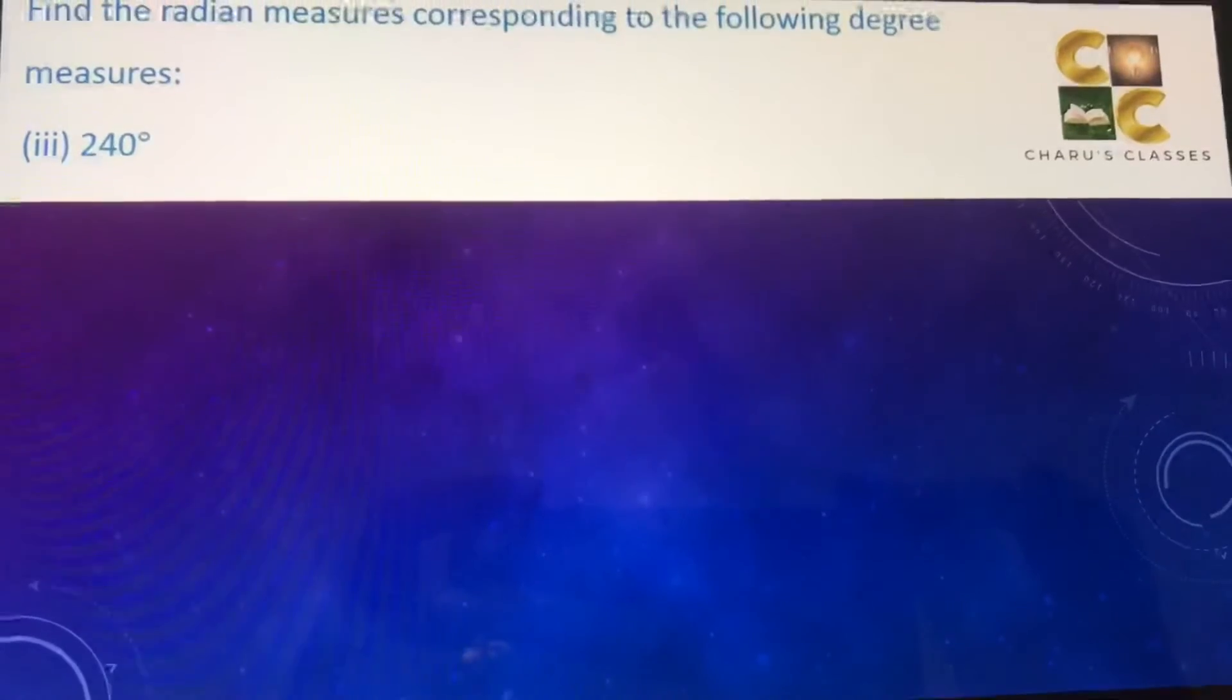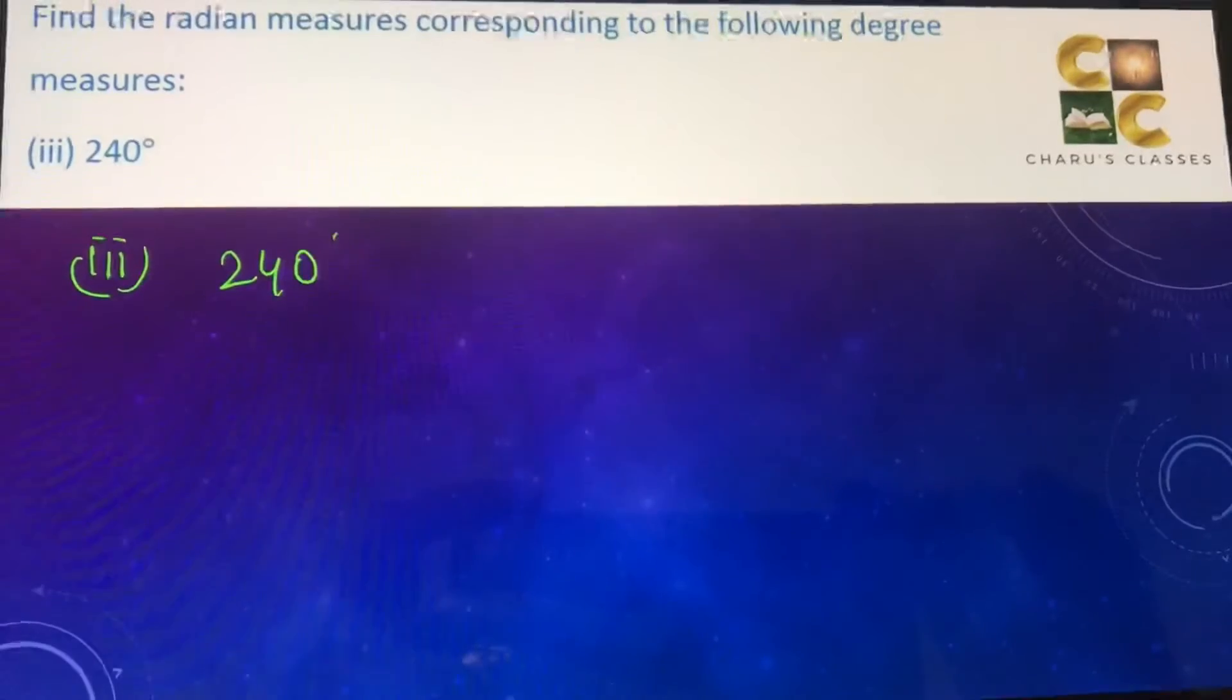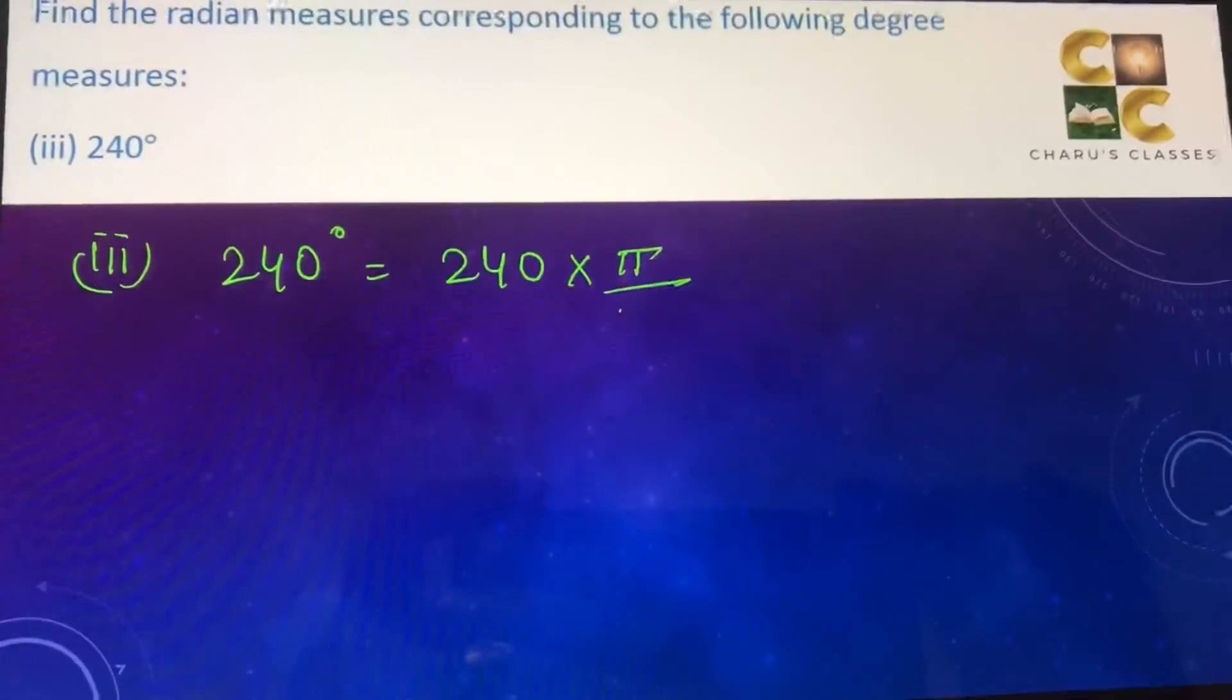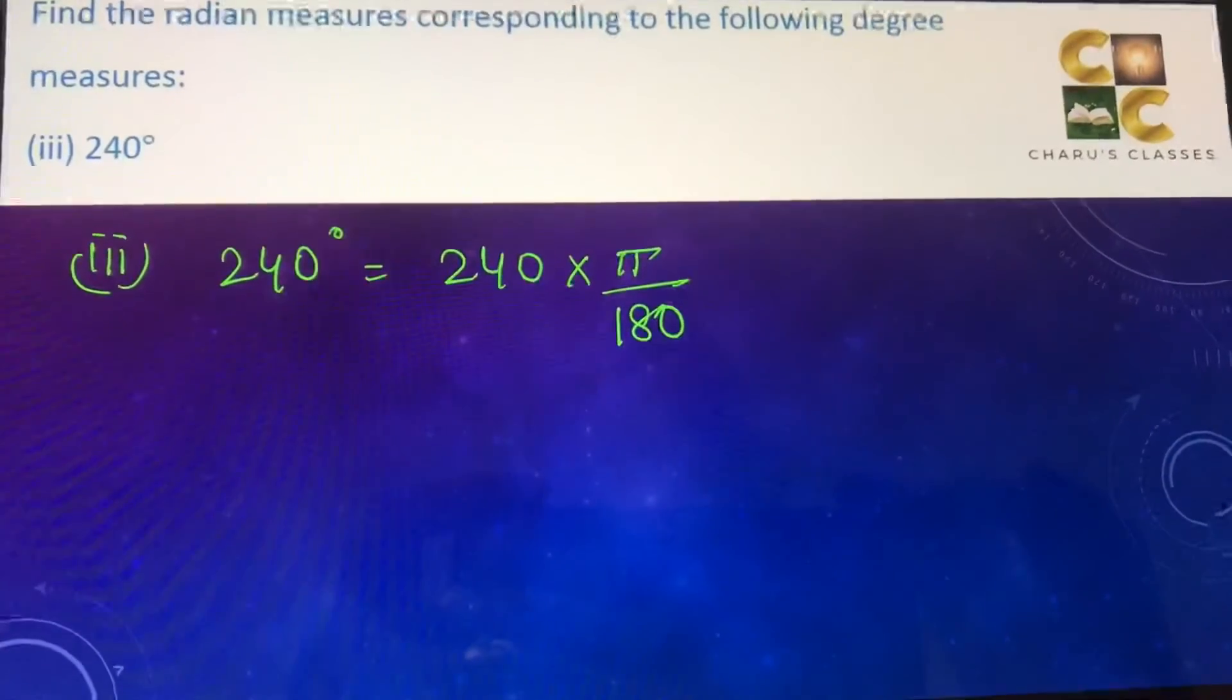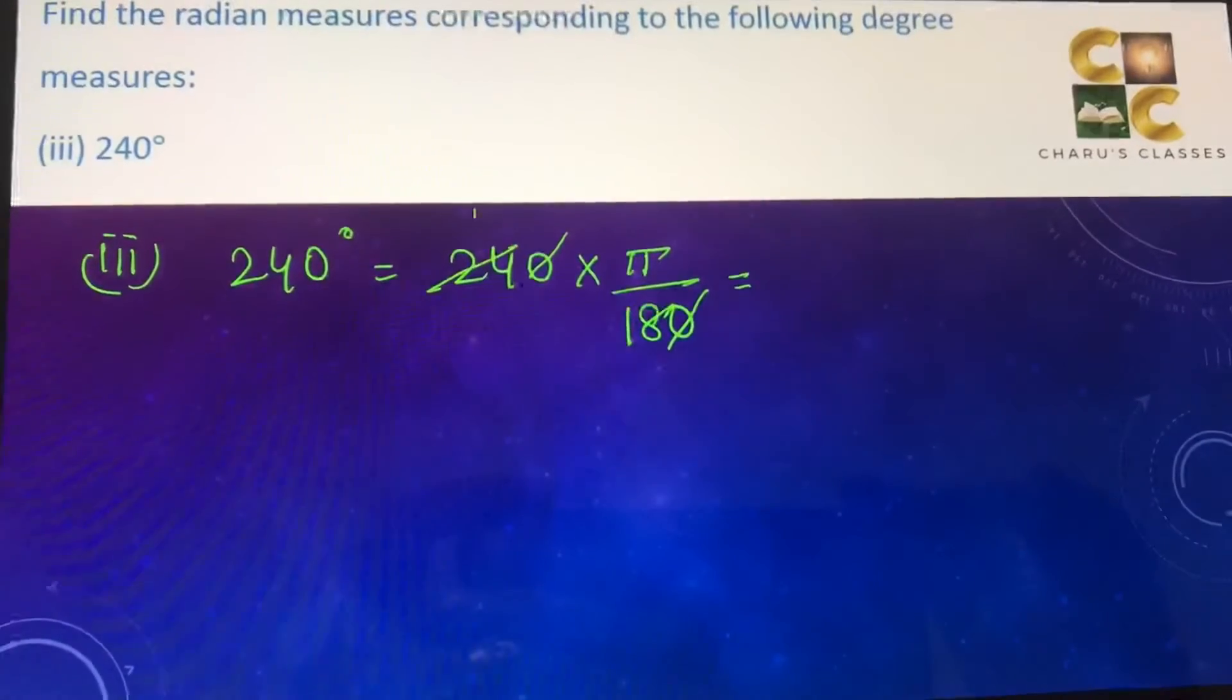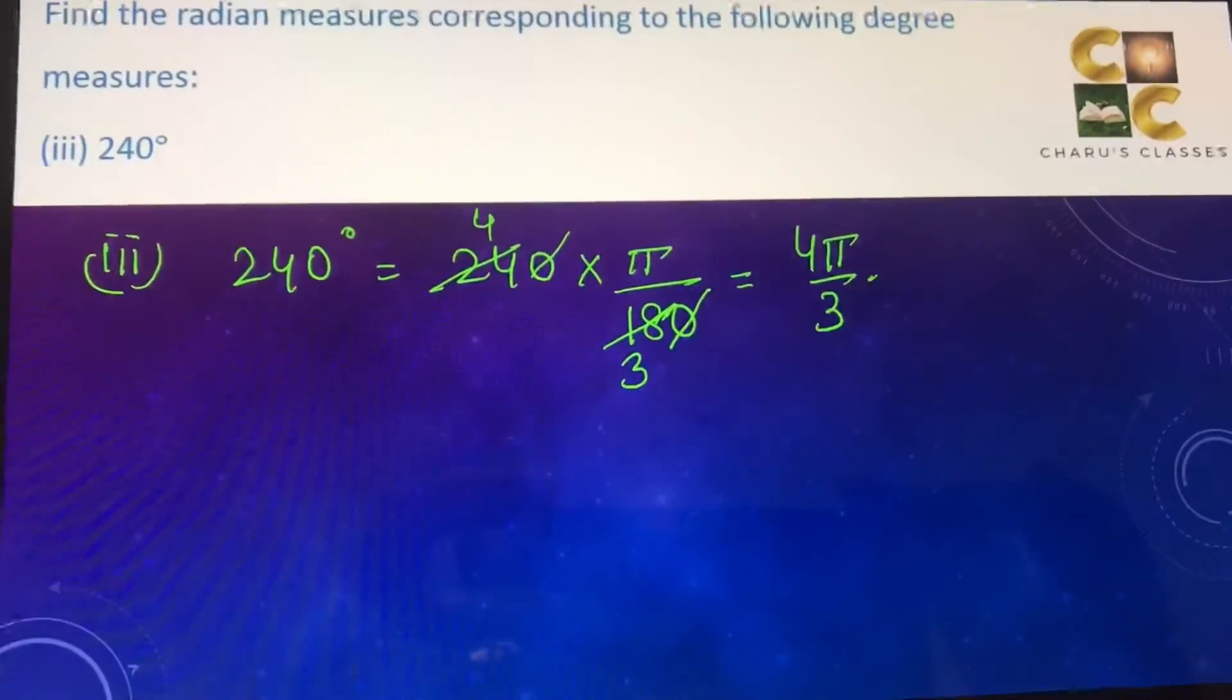Next is 240 degrees. So 240 degrees is equal to 240 into π by 180, which we can cancel. So this will give us 4π by 3 radians.